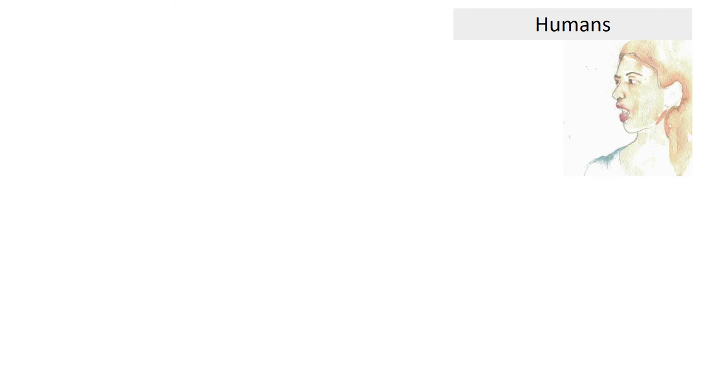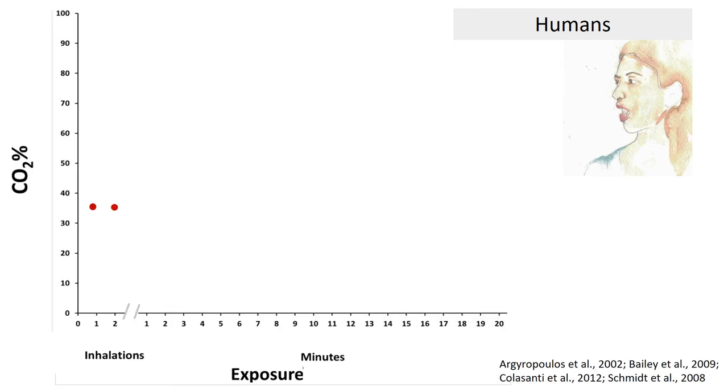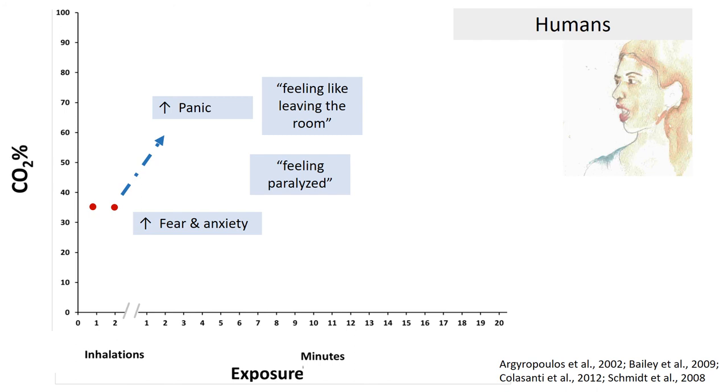Let's remember that we can make inferences about rat-felt emotions by comparing it to feelings in humans. In humans, one or two inhalations of 35% CO2 induces feelings of panic that resemble that of naturally occurring panic attacks. People also report feeling like leaving the room or feeling paralyzed. People also experience fear and anxiety when inhaling CO2, and the degree of the emotional experience increases with concentration.